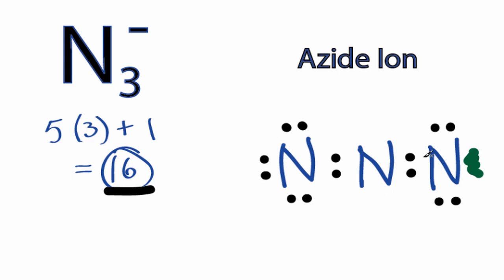We can move a pair of electrons from the outside into the inside to form a double bond and share those electrons with the central atom.